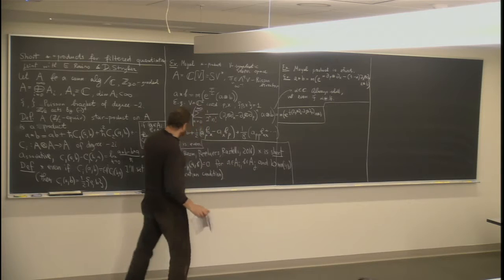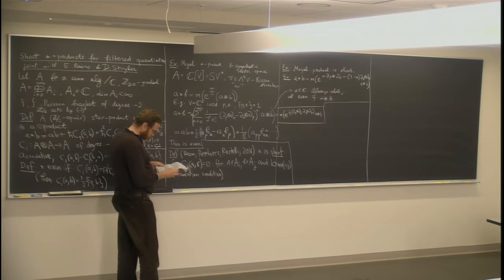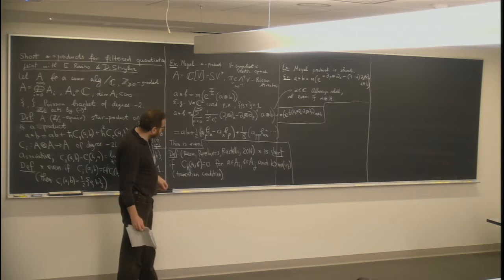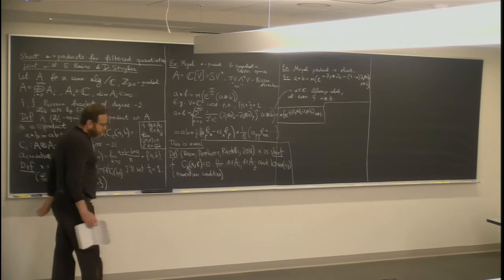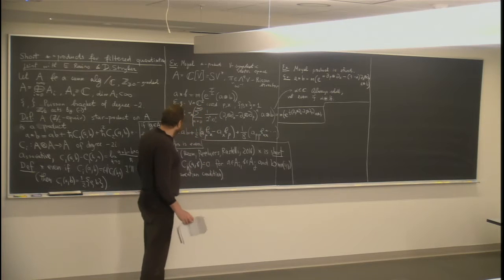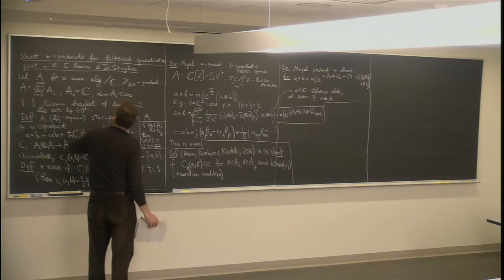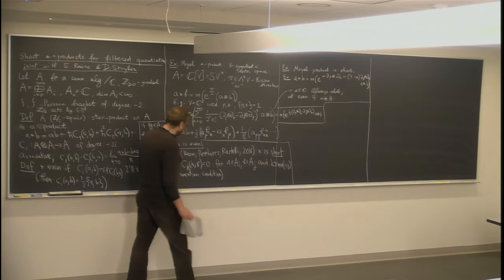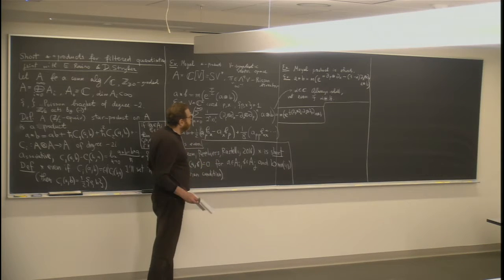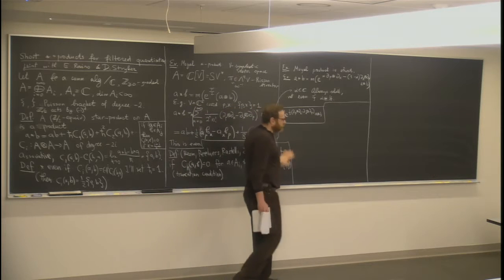The motivation for this study was a physical conjecture. From physics considerations, it followed that if you have a hyper-Kähler cone — a kind of singular hyper-Kähler manifold — then if you take the algebra of regular functions on this cone, this algebra admits short star products. Moreover, they have a nice structure: they are parameterized by finitely many parameters and can be computed in a sense.